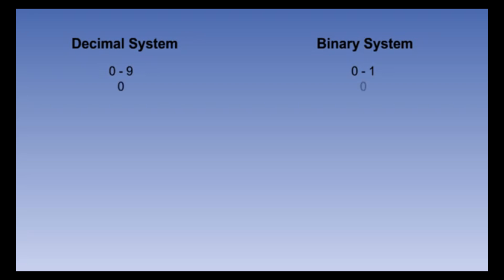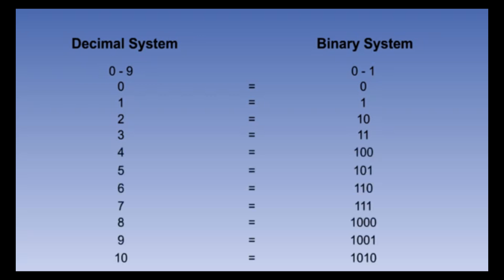Decimal zero is equal to binary zero, and decimal one equals binary one. But after that the two systems change. Decimal two is represented in the binary system by one-zero, decimal three by one-one, and so on as shown on the screen.